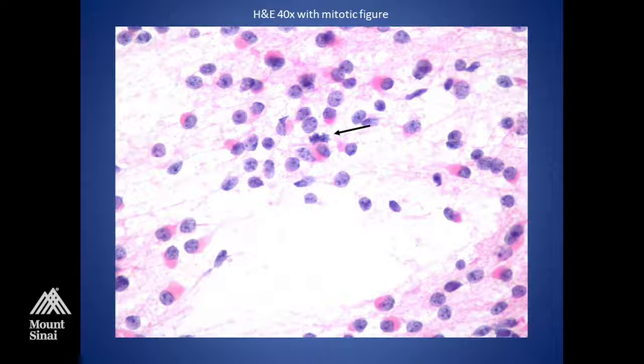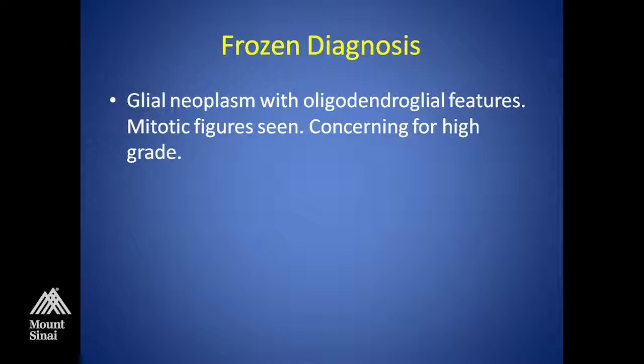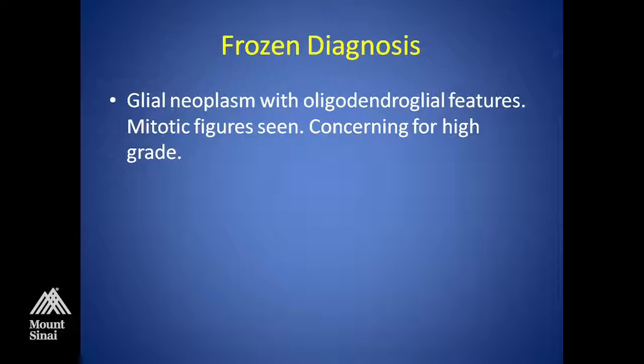The mitotic figures automatically raise concern that you might be dealing with a higher-grade tumor. The frozen section is not very helpful except for telling you it's a very cellular tumor. On frozen, I called this a glial neoplasm with oligodendroglial features — though all you have to say is that it's glial. Sometimes it looks oligodendroglial because of round nuclei and open chromatin, but you can be wrong. With molecular phenotype — IDH and ATRX — you'll be able to tell. You don't make the diagnosis of an oligo unless you have 1p19q FISH.